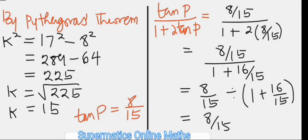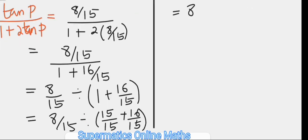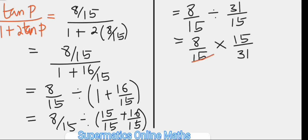8 over 15 divided by 1 can be written as 15 over 15 as an equivalent fraction with 15 as the LCM or the denominator, plus 16 over 15, thus giving us 8 over 15 divided by 31 over 15. Then the division symbol is changed to multiplication to give us 15 over 15 when the fraction is reversed. Where 15 cancels 15, and finally we have 8 over 31 as the value of the expression.